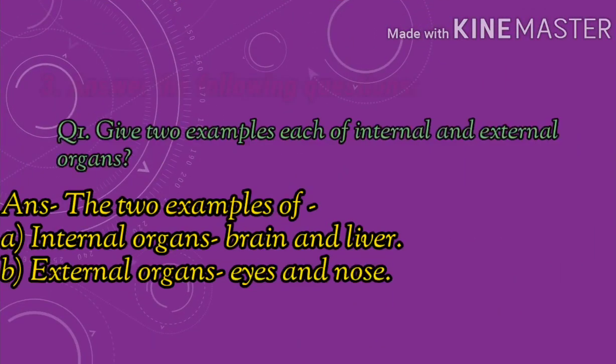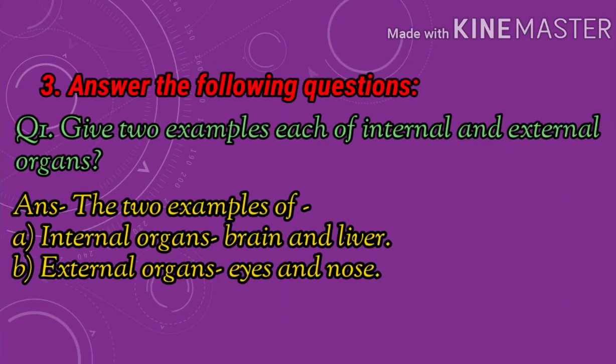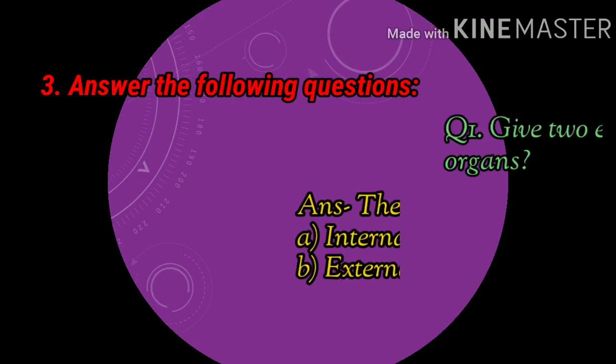3. Answer the following questions. Question 1. Give two examples each of internal and external organs. Answer: The two examples of internal organs are brain and liver. External organs: eyes and nose.